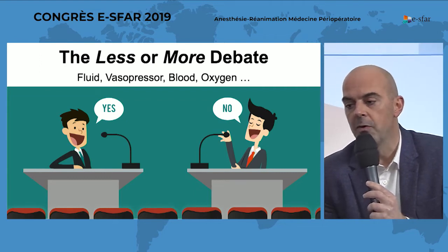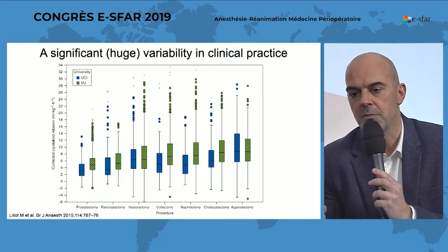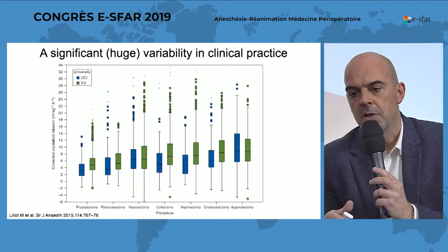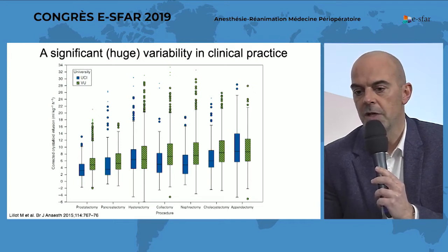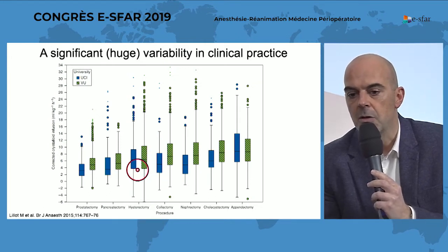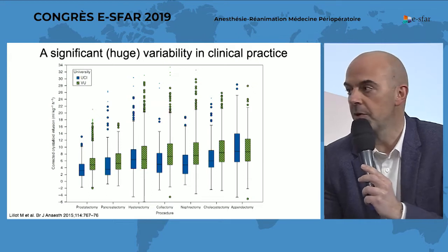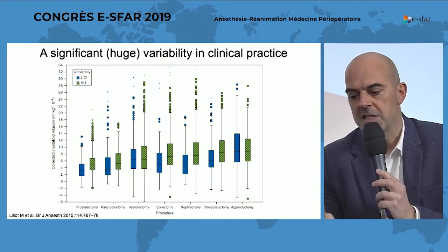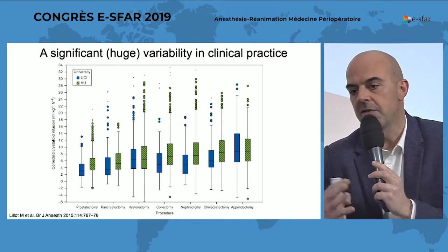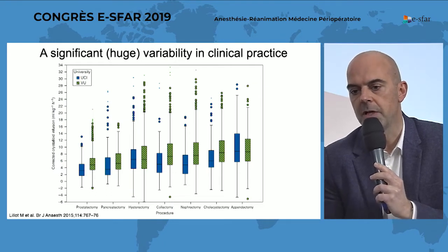I don't know if this overwhelmed literature can explain why in clinical practice we have such variability. When we observe in clinical practice what physicians do, we must admit that there is a very significant variability in the amount of fluid administered to patients. For example, if you look at a very common procedure like colectomy, some patients will receive around six millilitres per kilogram of crystalloid, while others will receive more than 20 millilitres per kilogram. So we don't know why there is such variability in clinical practice, and doctors don't know exactly how to perform fluid management in daily practice.